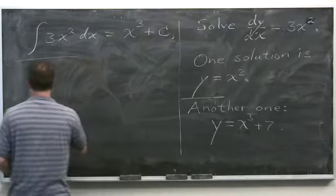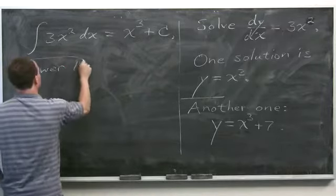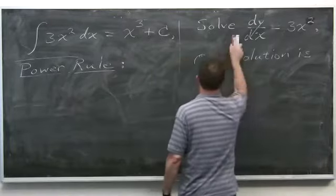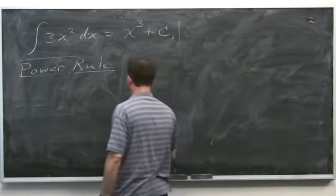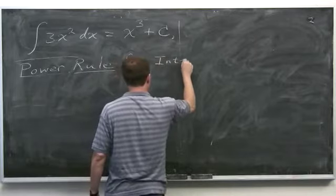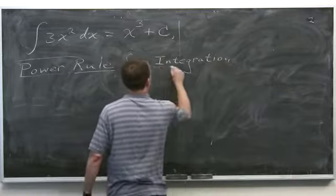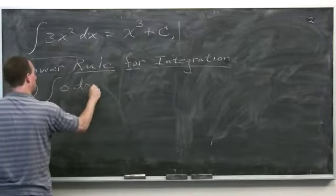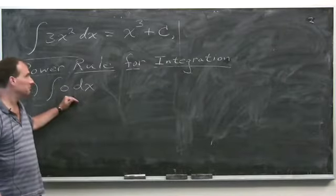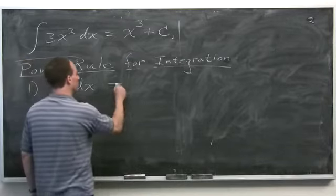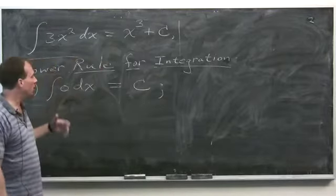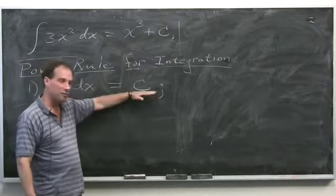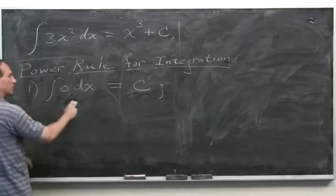The power rule for integration — including some special cases. The anti-derivative of 0: something whose derivative is 0 is just a constant. The derivative of any constant is 0. The integral of 1 dx — something whose derivative with respect to x is 1 — is x plus an arbitrary constant.